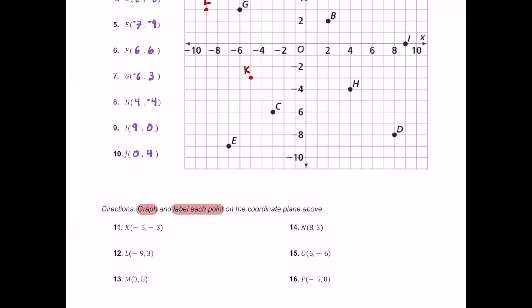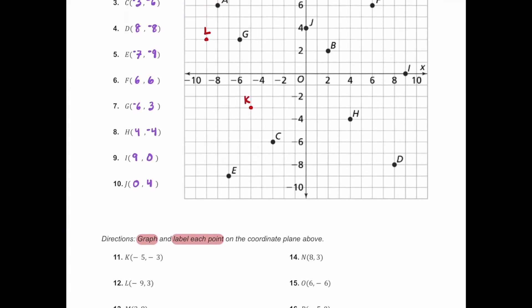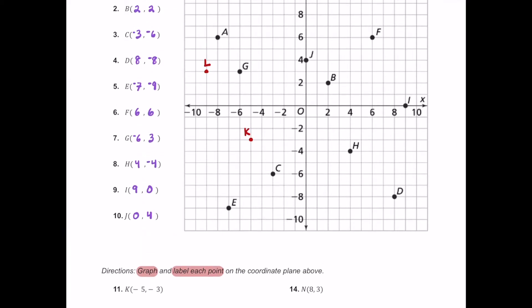For M, which is three comma eight. Start at the origin, go to positive three to the right, and then go to positive eight — so that's up here. This is where point M is going to be.